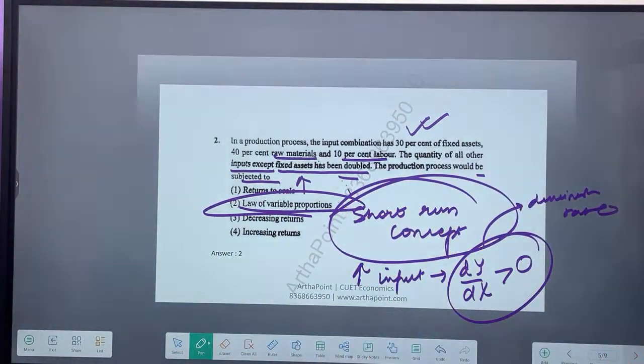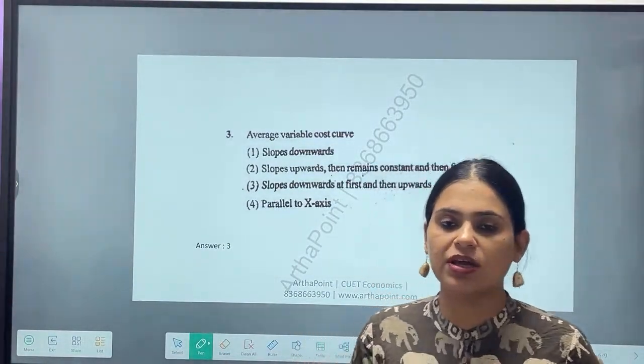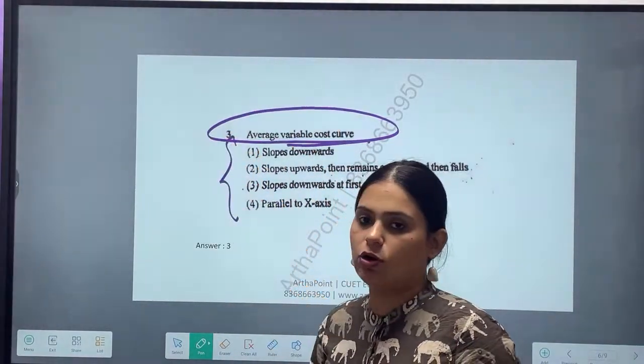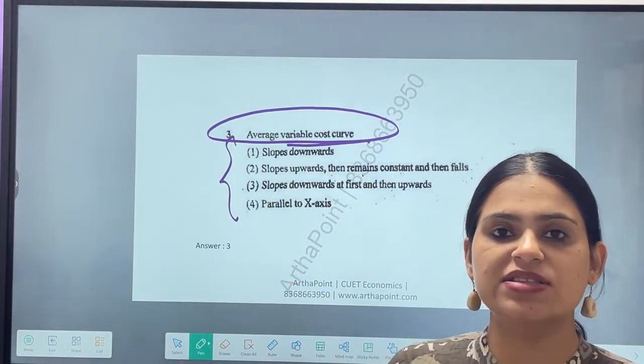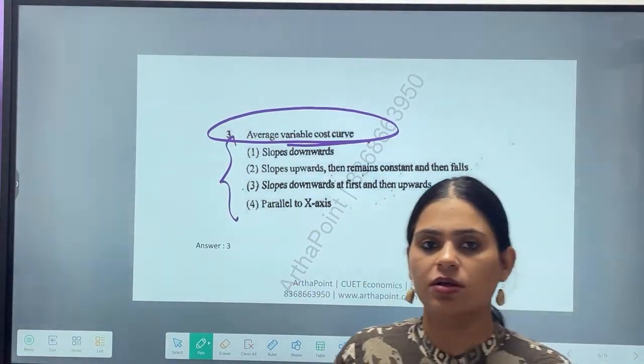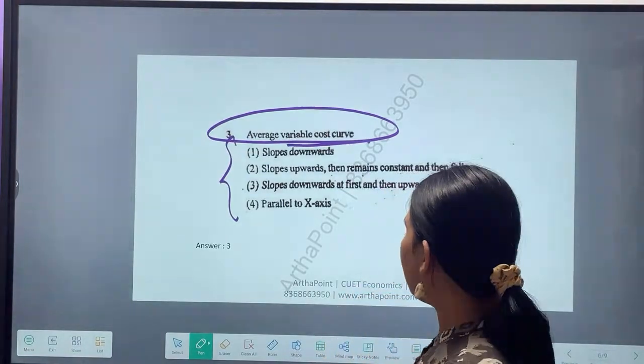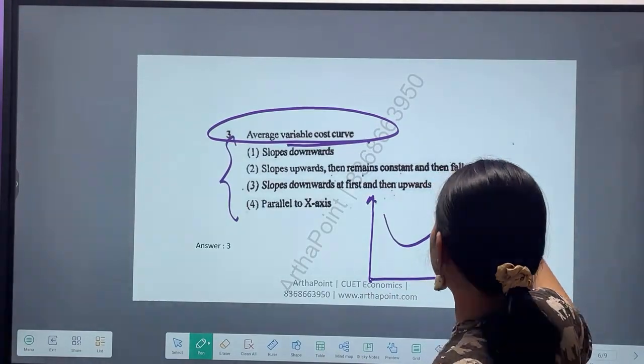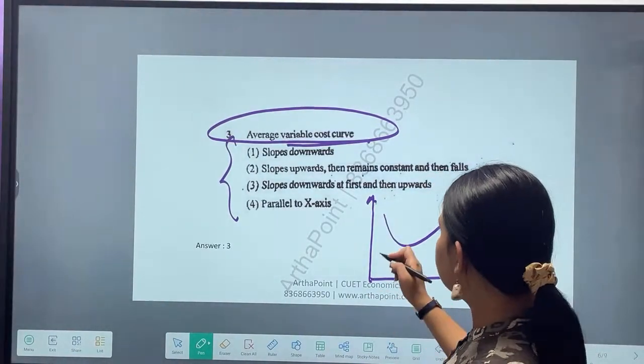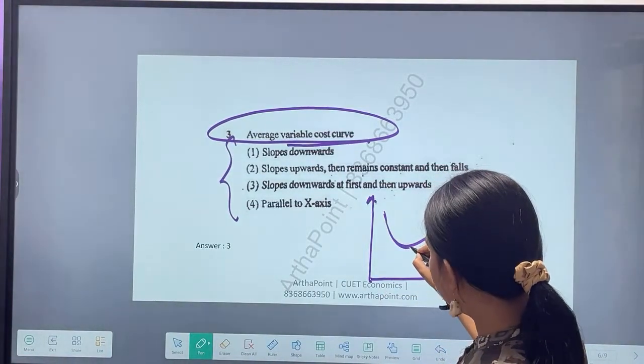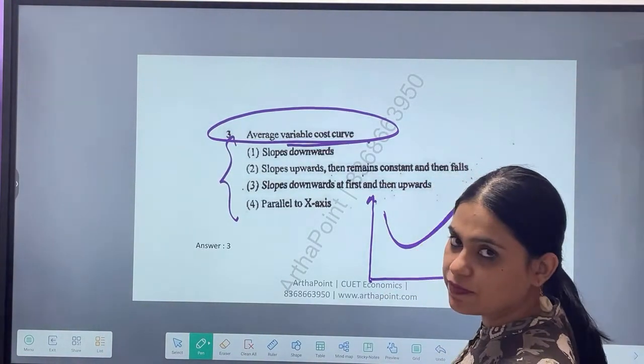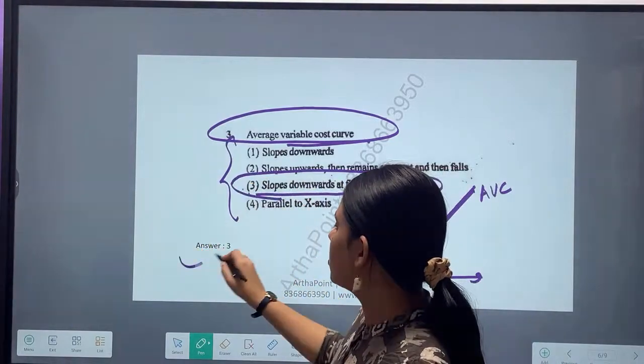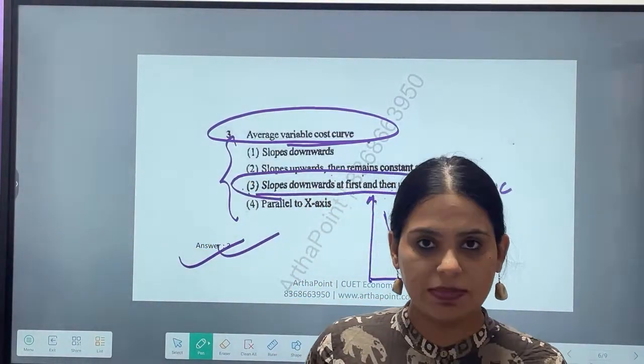Come to the next question. Question number three. Try to think about this one. Average variable cost curve - which of the following option is correct? Average variable cost curve looks like this. This is AVC. What happens? It is first decreasing, then increasing. It slopes downward at first and then upward. So the correct answer will be 3. Clear?